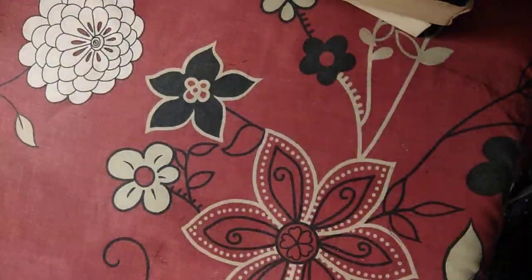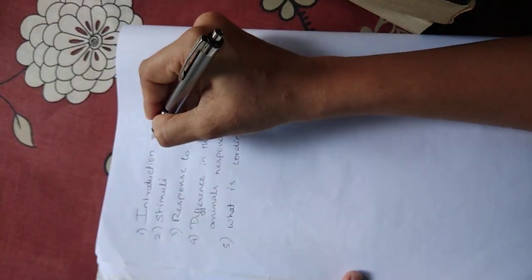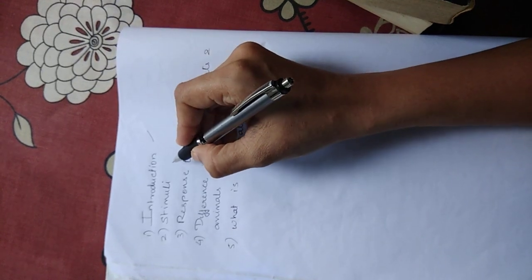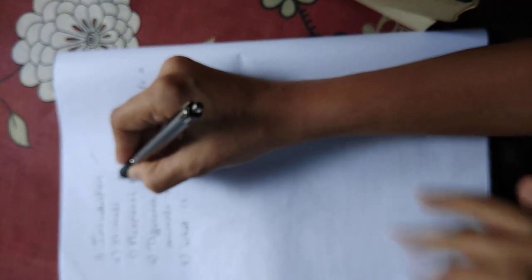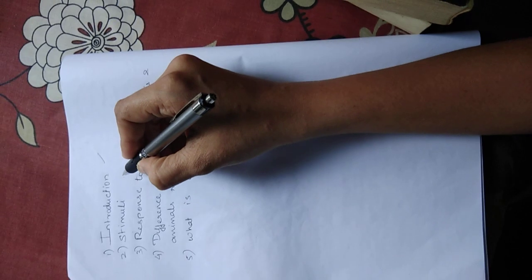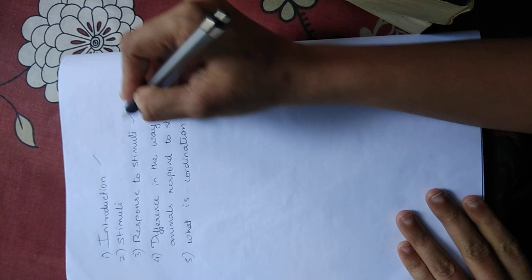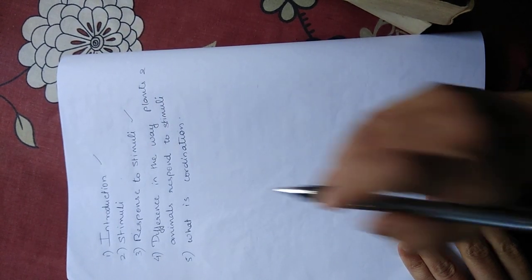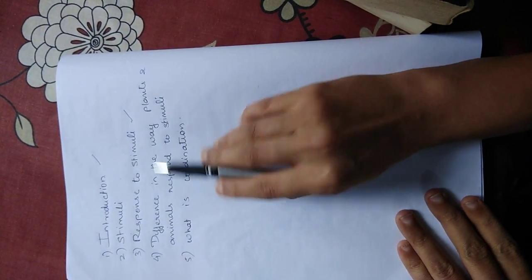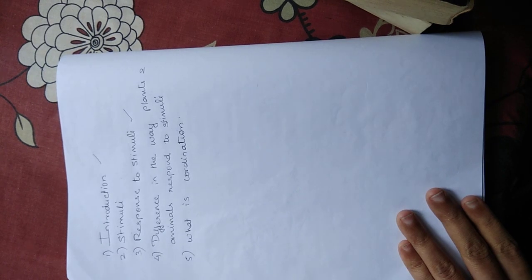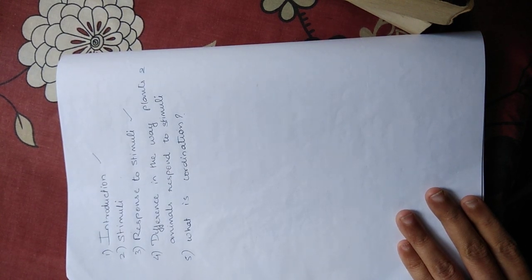In this particular video, we are going to have a brief introduction, then discuss what a stimulus is, how various organisms respond to stimuli, the difference in the way plants and animals respond to stimuli, and we will briefly talk about what is exactly meant by coordination and control.